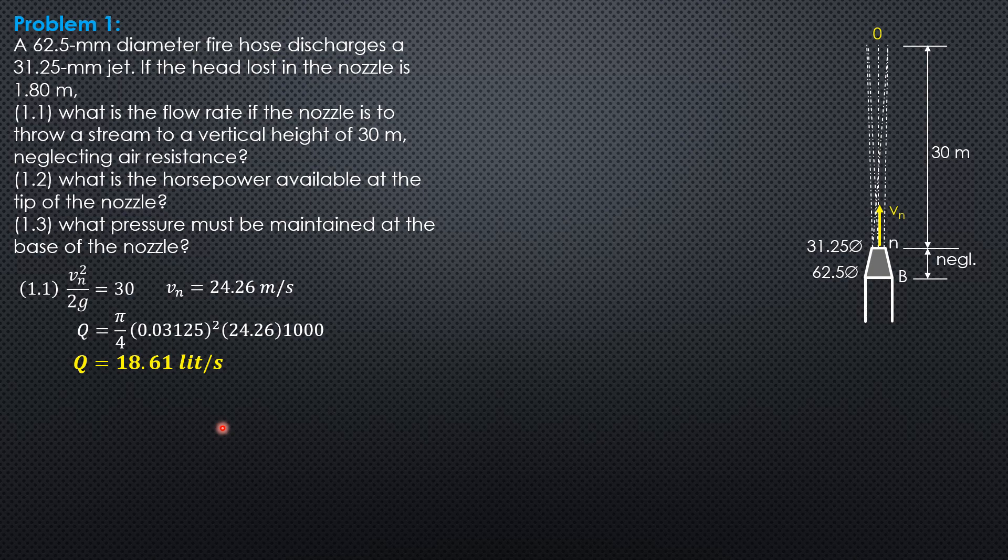Therefore, horsepower at the nozzle tip is weight flow rate, Q gamma of water, times velocity head, which is 30 meters.